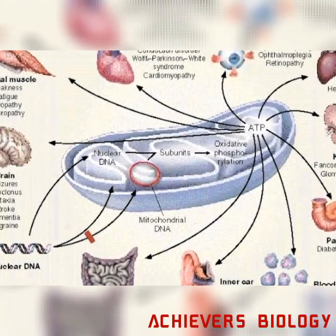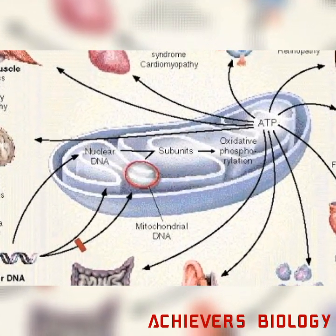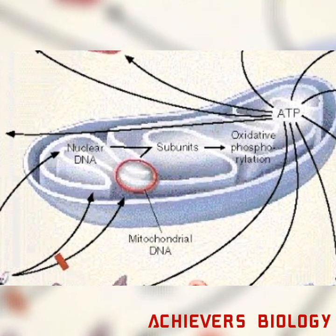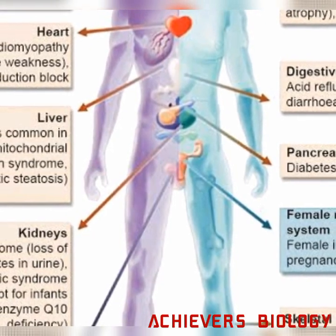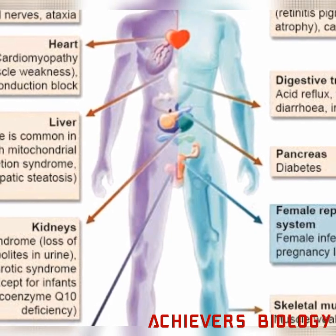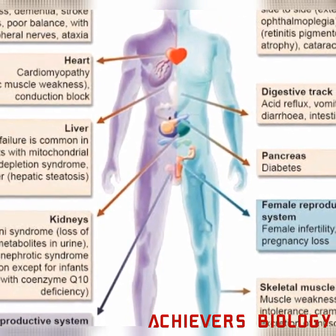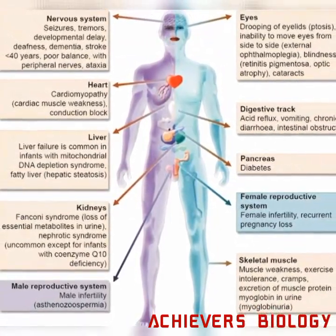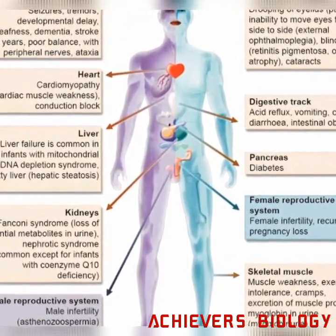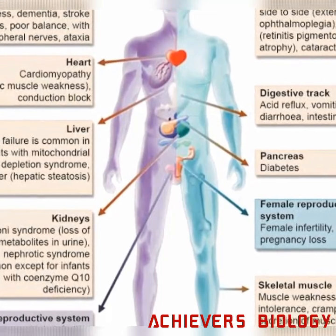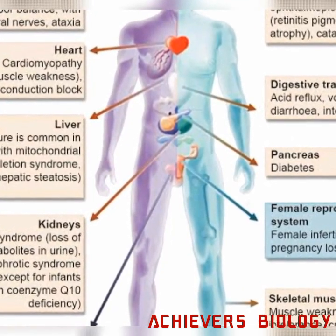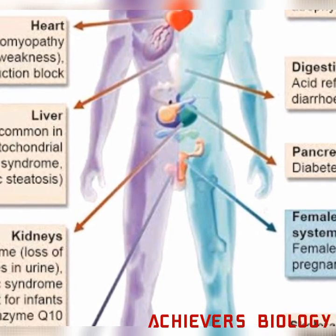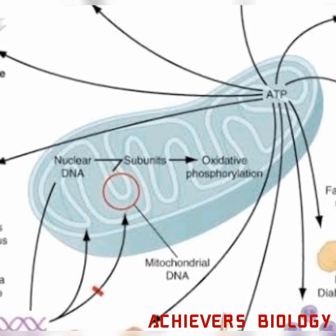In the case of Kearns-Sayre syndrome, the PEO onset occurs before the age of 20, with pigmented retinopathy plus one of the following: CSF protein greater than one gram, cerebral ataxia, or heart block. Bilateral ptosis can also occur in these cases. These are the conditions where mitochondrial DNA dysfunction can really affect individuals.